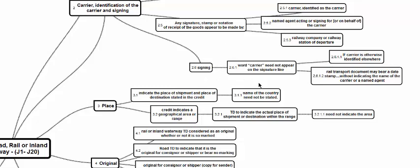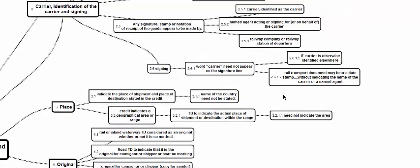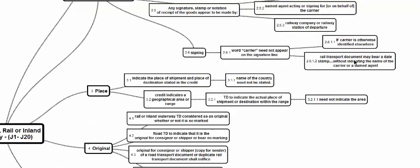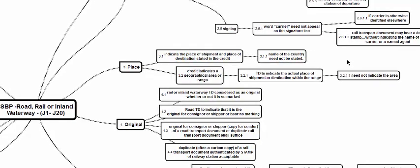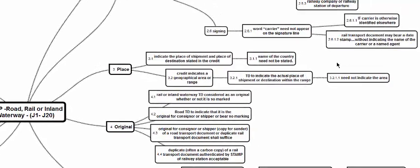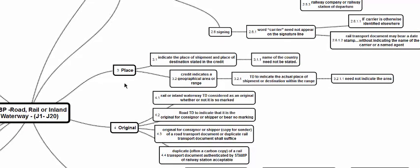While signing the road, rail, or inland waterway transport document, the word 'carrier' need not appear on the signature line if the carrier is identified elsewhere. For railway companies, only the carbon copy or the round seal of the railway station of departure will be present, and the name of the carrier will normally not be separately identified — the stamp itself indicates which railway company or station it is.